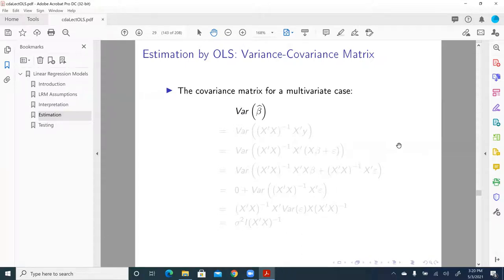Now let's talk about the covariance matrix for a multivariate case. So we want to calculate the variance of beta hat. What is the variance of beta hat?